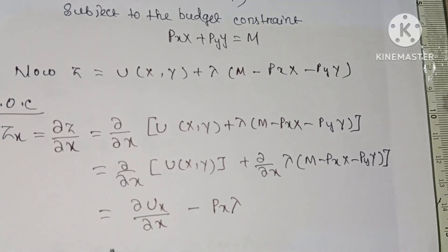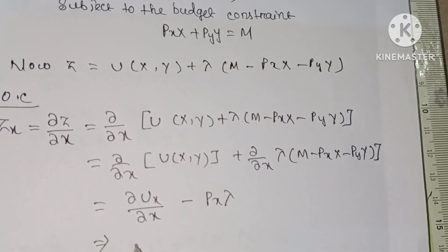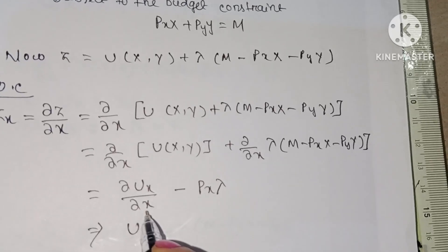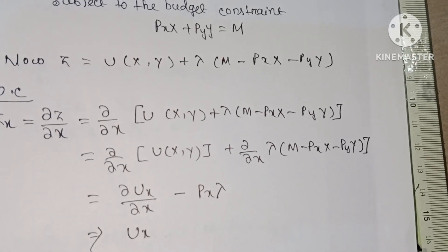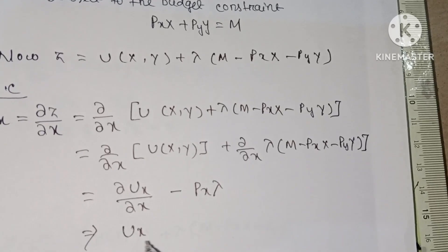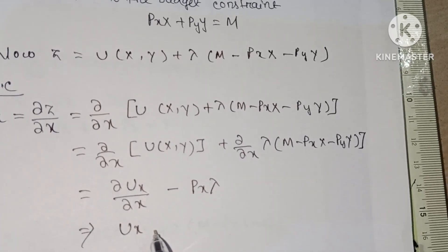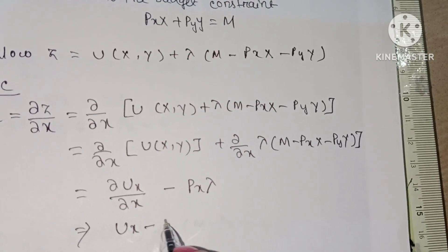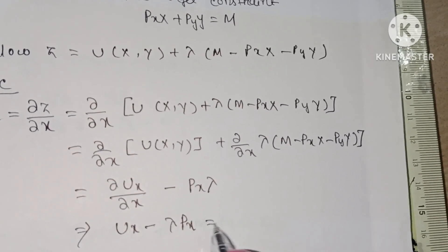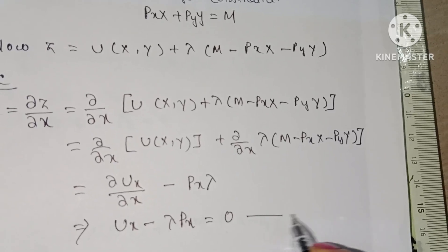We can write ∂u/∂x as u_x, or f_x, or f₁. So this becomes u_x minus λ·px equal to zero. This is equation number one.